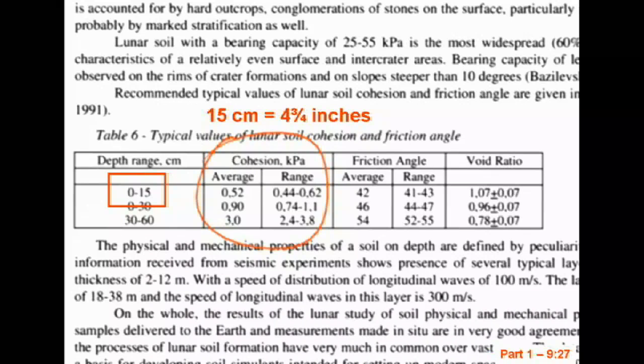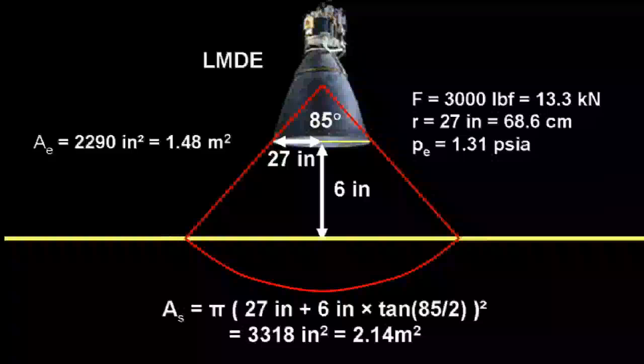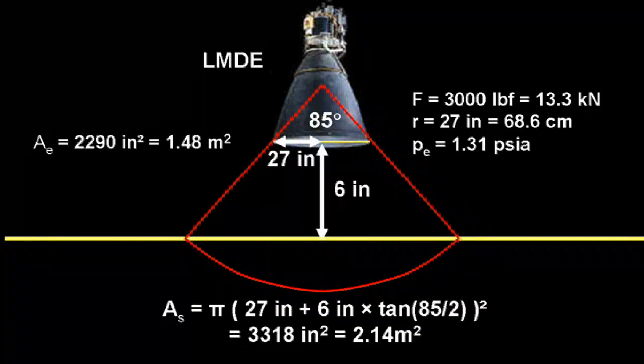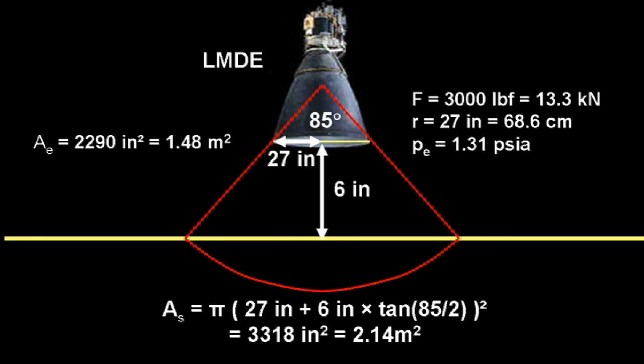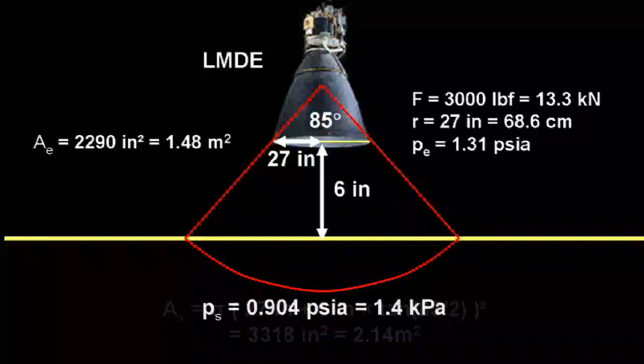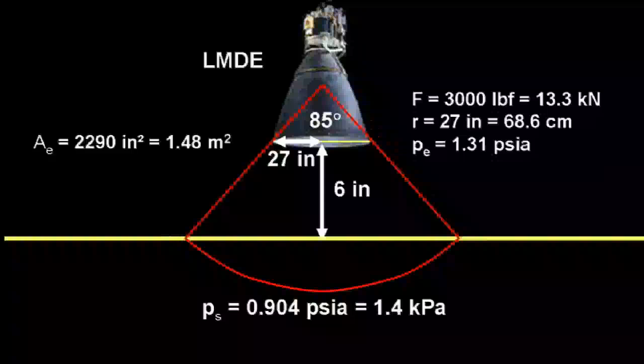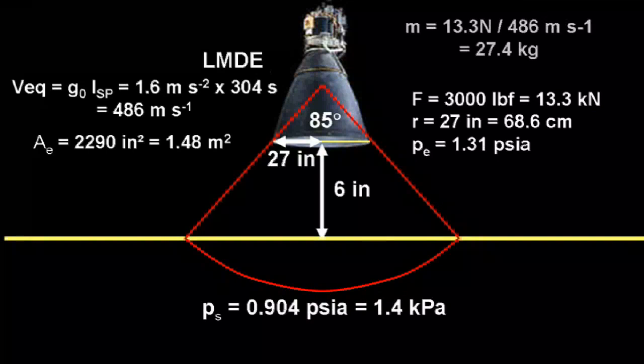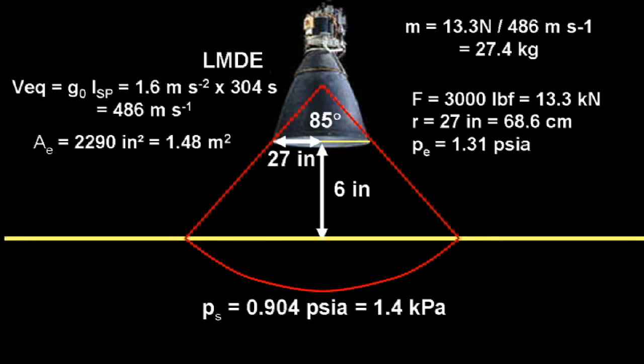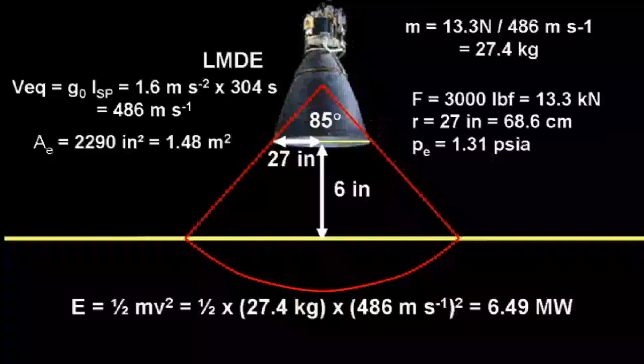So, how bad a job did Gilliam really do? What do the correct numbers look like? Well, assuming worst case on the later J-series missions, the lunar modules landed with a little more than 13 kN on board. The main disturbance area, half a foot under the nozzle, was 2.14 meters squared. The static pressure model says that the absolute pressure in this area was 1.4 kilopascals. The equivalent velocity of the descent engine was 486 meters per second. To remain at hover, the propellant mass required to push through the nozzle was 27.4 kilograms. The kinetic energy in these gases was about 6.5 megawatts.